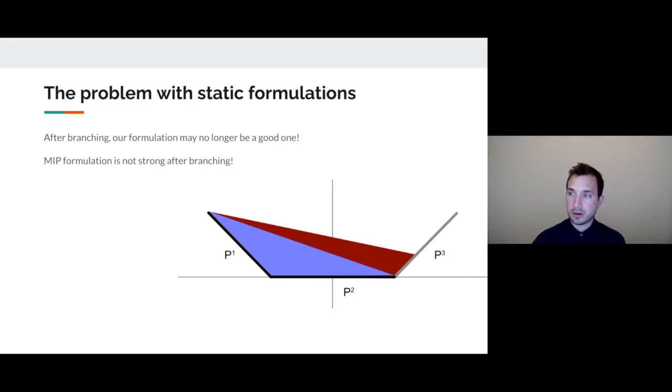You can see there's a gap here. There's a difference between the two. This will generally lead to worse dual bounds, which in turn will lead to more enumeration in my search tree and slower computational times. One disadvantage of a static formulation is that as you go deeper in the search tree, your formulation might get worse and worse.